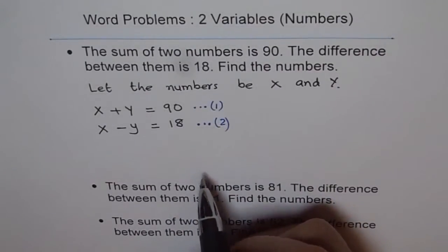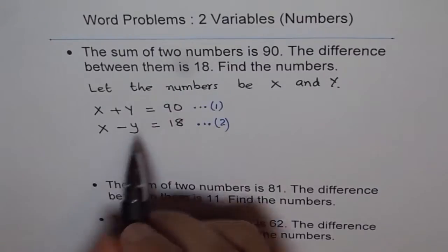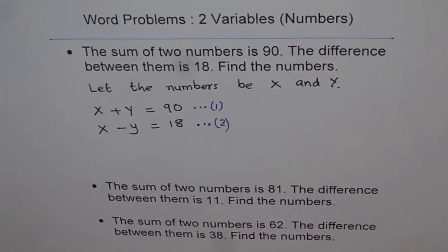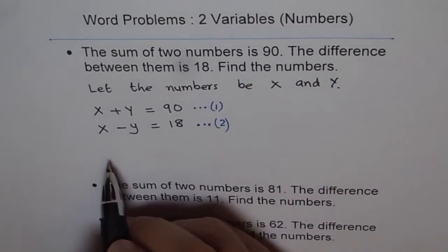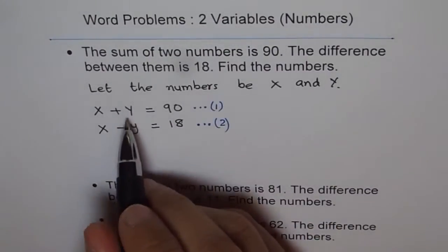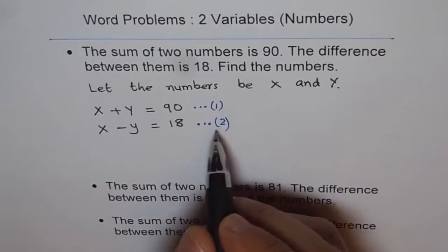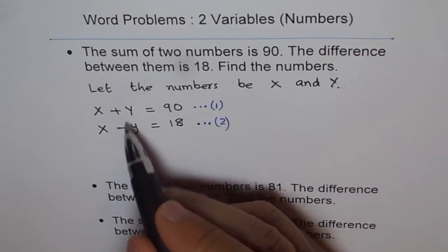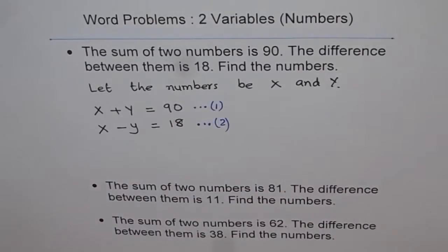We have two equations and two variables. Remember, to find two variables you need two equations — if you have them, you can solve for both. Now, using these two equations, let's solve for X and Y. If I add equation 1 and equation 2, I will eliminate Y, because plus Y minus Y gives me zero.